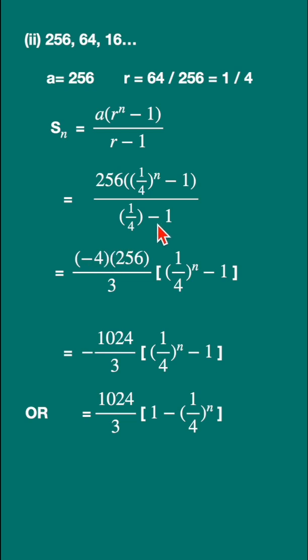The denominator here you have to multiply with the numerator, so the expression will be minus, so minus 4 into 256 upon 3, into this will remain as it is. So when you multiply this, you get minus 1024 upon 3 multiplied by this expression. This is the answer.